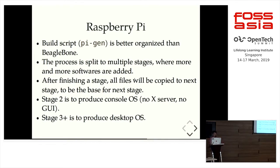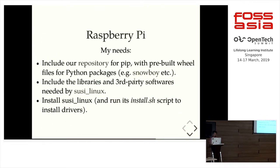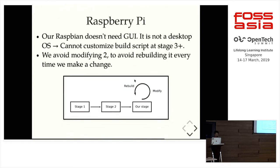Stage 2 produces the console operating system with no GUI, and stage 3 plus is to produce the desktop OS. But our application, the Zenith UI, doesn't need a desktop. Our needs are very similar to BeagleBone — we want to include some more repositories, some binary files for Python packages, and because this board is used in the field, we want to include the Suzy Linux software.